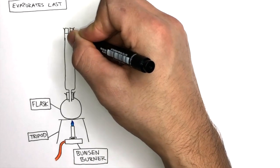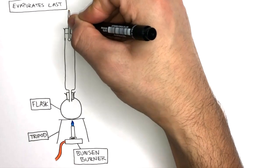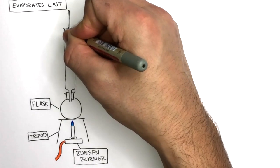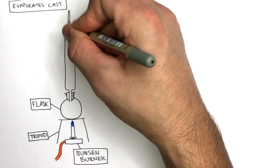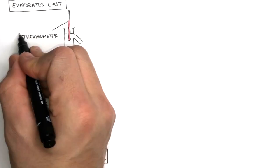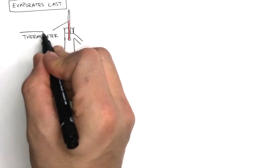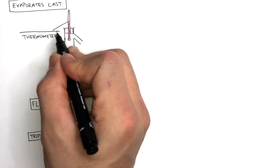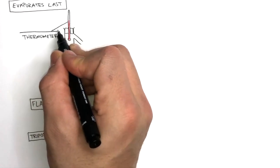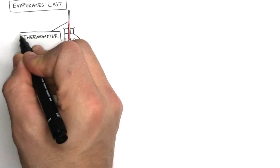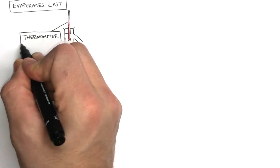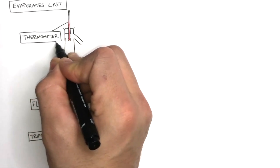The thermometer is placed at the top of the fractionating column, where the bulb is placed level with the sidearm next to the condenser. This is so the thermometer is able to accurately measure the temperature of the gas as it flows into the condenser. If the bulb of the thermometer is too low, it will measure the temperature of the hot mixture below, giving inaccurate readings.